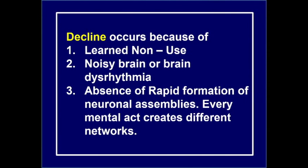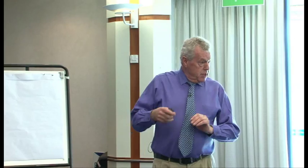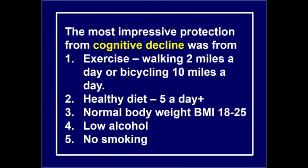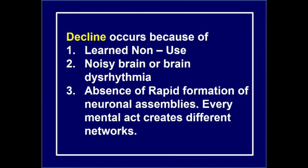Decline occurs in brain function for a number of reasons: learned non-use — we learn not to use parts of our brain; a noisy brain or dysrhythmia, where nerves are firing when we don't want them to; and the absence of rapid formation of neuronal assemblies — a lack of stimulation. Learned non-use is very common after traumatic brain injury and strokes. The noisy brain is mostly an imbalance between the autonomic nervous systems, and the absence of neuronal assembly formation is simply a lack of stimulation.